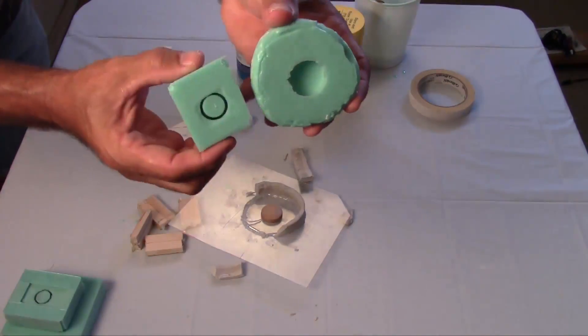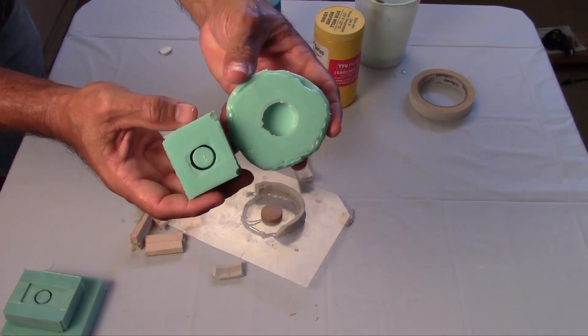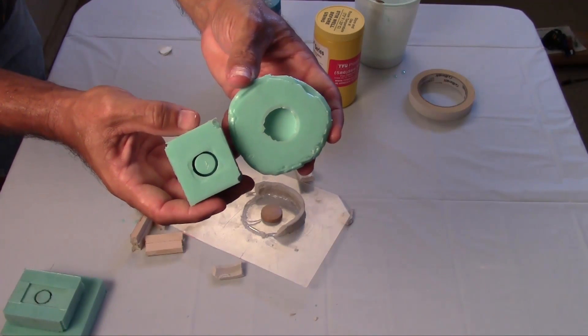So there you go. We've got our two molds. So we'll get those cleaned up. And then we'll try to cast and make urethane parts out of these.